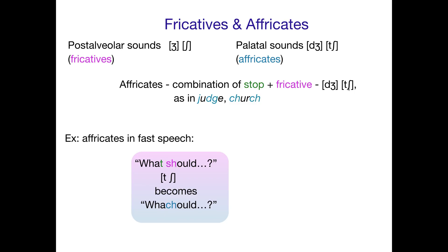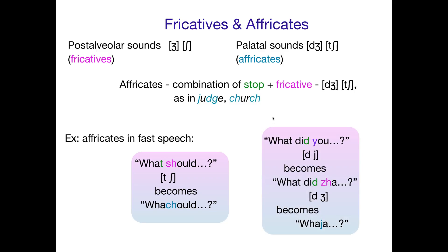So that's the affricate 'ch', which again is 'tuh' followed by 'shuh'. And you can get that same thing with the affricate 'J', which is 'D' followed by 'J'. So let's do this with 'what did you'. In faster speech, 'what did ya' becomes 'what did j' — you get that little 'J' sound, so you actually get the 'D' followed by the 'J'. And when you get even faster, you end up with 'what-j'.